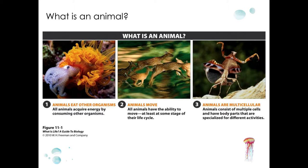Animals house cells that carry out specialized functions. In addition to these characteristics, another characteristic of animals is that most, though certainly not all, reproduce sexually.